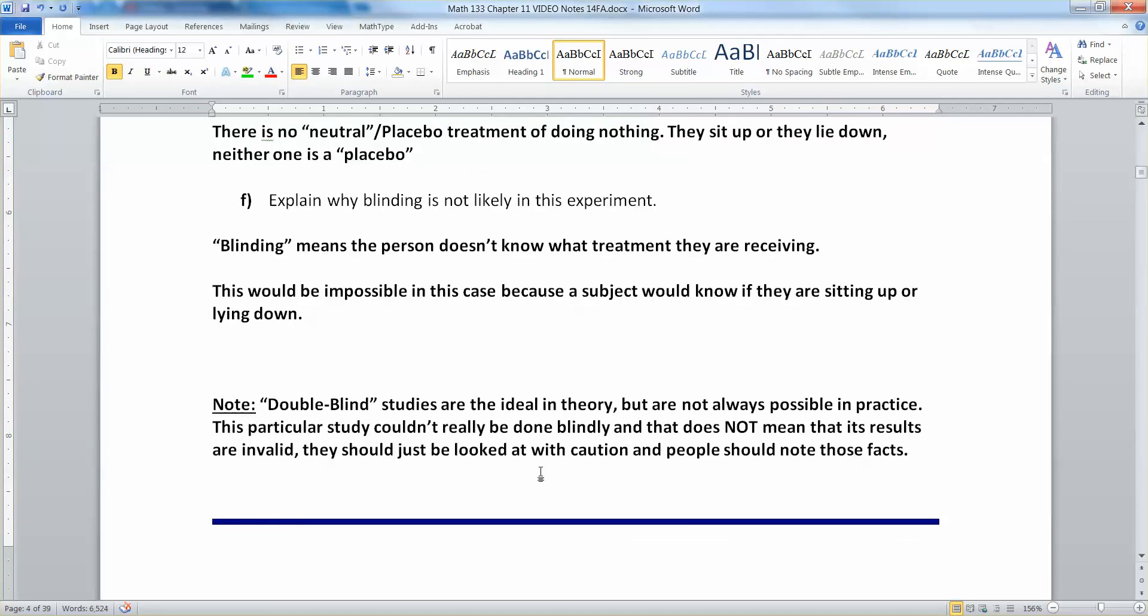So double blind studies are the ideal in theory. They're what we really want. But they're not always possible in practice. This particular study couldn't be done blindly, even if you wanted to. And that does not mean that its results aren't valid. They should just be looked at with caution. And people should note those facts that it was done without blinding. Actually, this study was done without even single blinding. And that's okay. All right. We're all done with section one.